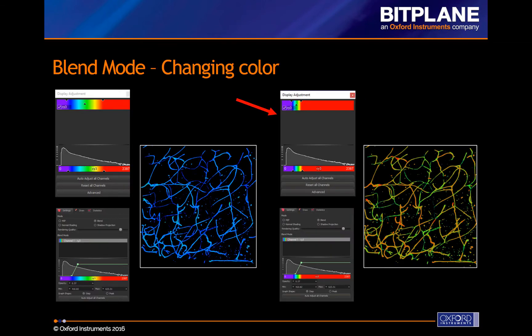Here is an example where the image's intensities are assigned a spectrum lookup table. The transfer function for the Blend Mode settings was not changed on the right compared to the left. Therefore, the same voxels are rendered at the same opacity levels. However, the display adjustment maximum threshold was changed, so the colors assigned to those voxels are now different.